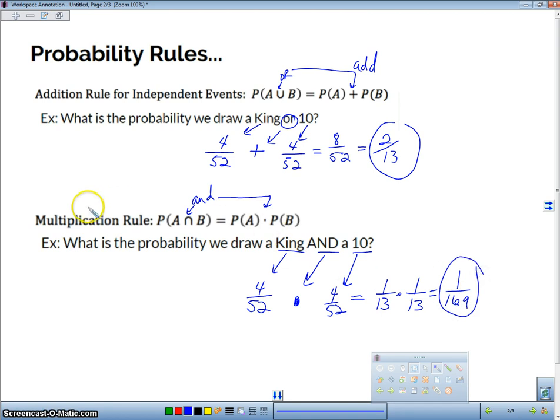OK, so the probability of the multiplication rules for and, two events happening, and one event and another event. And then the addition rules for things or. So let's take a look at a couple more examples using all of these.